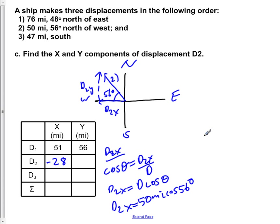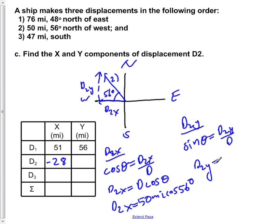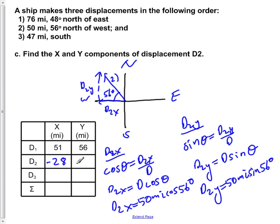For D2y, we apply SOH-CAH-TOA: sine of theta equals D2y over the hypotenuse D. Solving for D2y gives D2y equals D sine theta. Plugging in: D2y equals 50 miles times sine of 56 degrees, which gives 41 miles. Since it is pointing in the positive y direction, it is positive 41 miles.